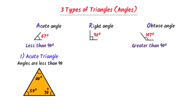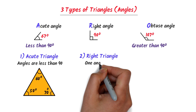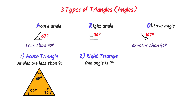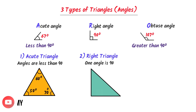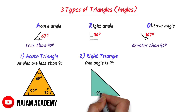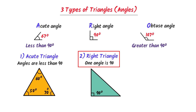The second type of triangle is the right triangle or right angled triangle. Those triangles in which one angle is 90 degrees are called right triangles. For example, in this triangle, this angle is 90 degrees, so this triangle is known as a right angle or right angled triangle.